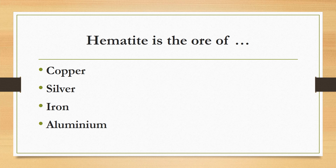Hematite is the ore of: copper, silver, iron, or aluminium? The correct answer is iron. Hematite is red iron oxide and is an ore of iron. Other ores of iron include magnetite, iron pyrites, and limonite.